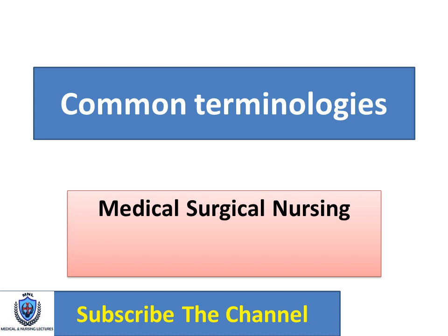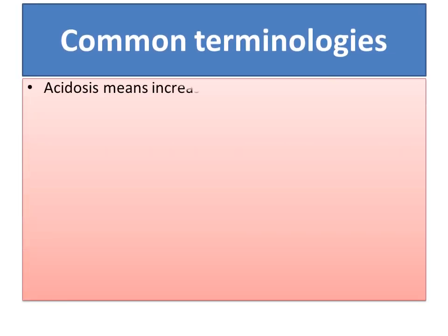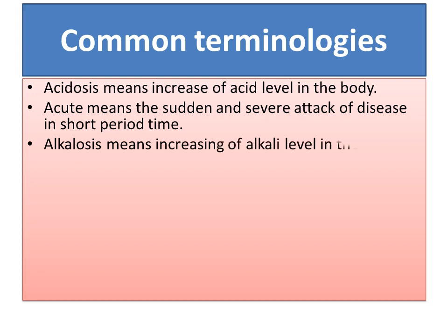Assalamualaikum, this is Jahangir and you are watching Medical and Nursing Lectures. Dear learners, our today's topic is common terminologies used in the field of medical-surgical nursing. The first terminology is acidosis — acidosis means increase of acid level in the body. Acute means the sudden and severe attack of disease in a short period of time. Alkalosis means increasing of alkali level in the blood, or increase in your pH level.